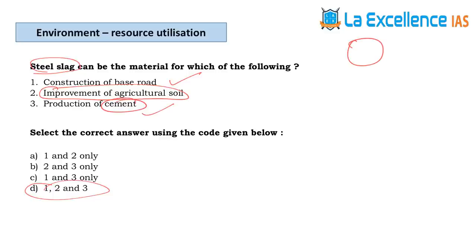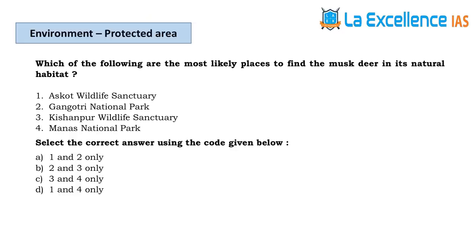The next question is about musk deer — they are asking about its natural habitat. The natural habitat covers statements 1 and 2, so the answer is A.